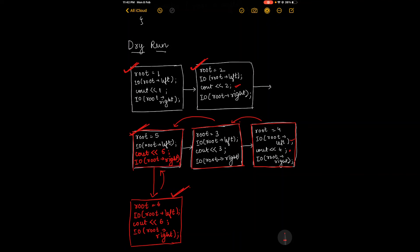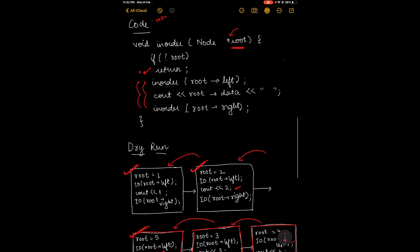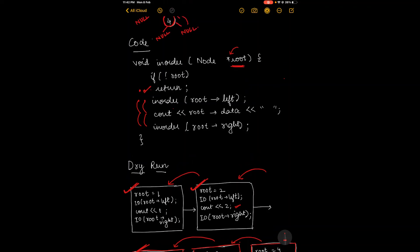The root equals 5 block is completely executed. From here we go back to 2, then back to 1, and finally this code is completed since all blocks have been fully executed with all statements. I hope this was clear — let's now code the same in the compiler.